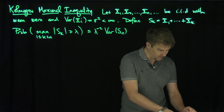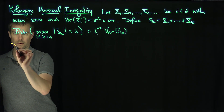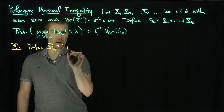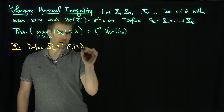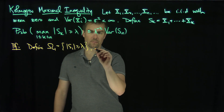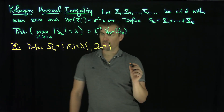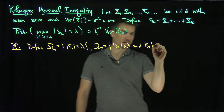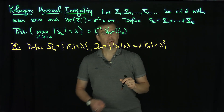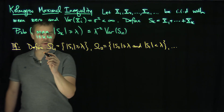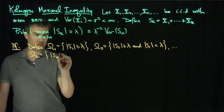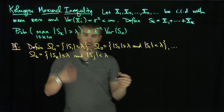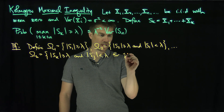Here's the proof. We're going to partition our probability space into a bunch of subspaces. Define omega_1 to be the set where s1 is bigger than or equal to lambda. Omega_2 is the set of points such that s2 is bigger than or equal to lambda and s1 is less than lambda. In general, omega_k is the set where sk is bigger than or equal to lambda and sj is less than lambda for all j less than k.